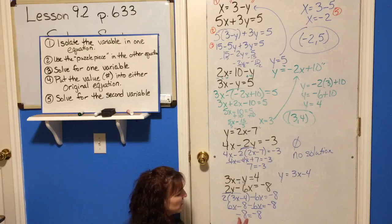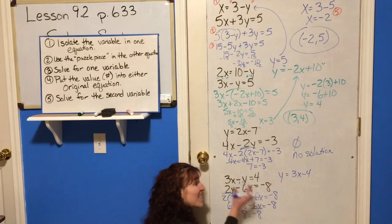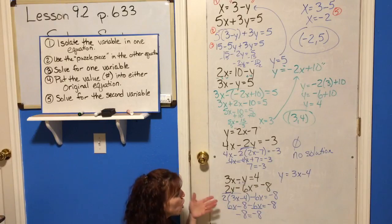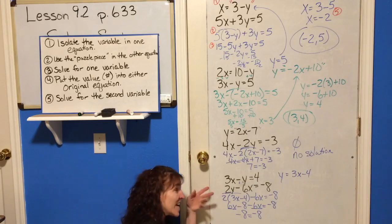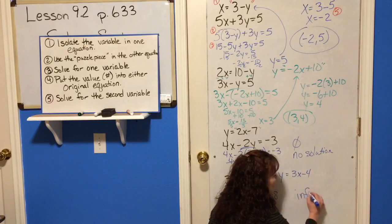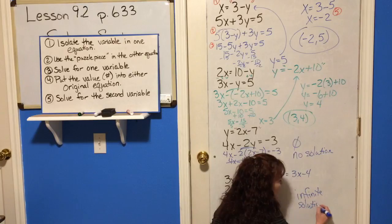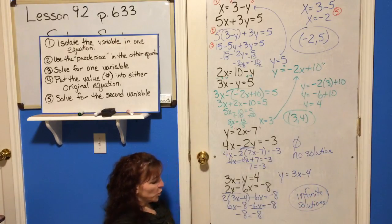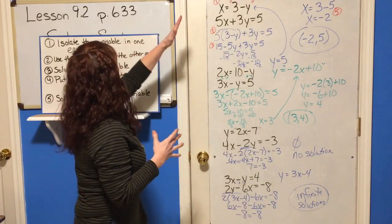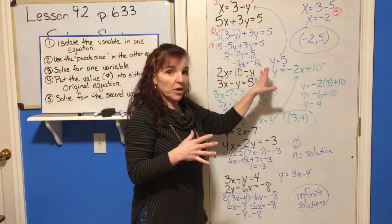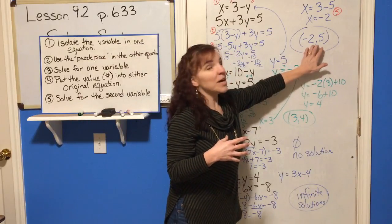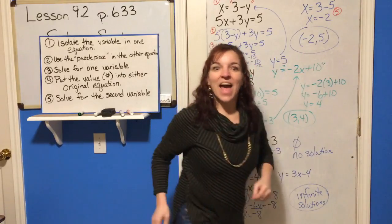The 6x terms drop out, leaving negative 8 equals negative 8 — which is true. This is different from the no-solution case because negative 8 does equal negative 8. No matter what numbers you put in, if it solves one equation it solves the other: this has infinite solutions — the equations share the same line. To recap: step one isolate a variable, step two plug in your puzzle piece, step three solve, step four put the value back to find the other variable, and give your final answer in point notation.